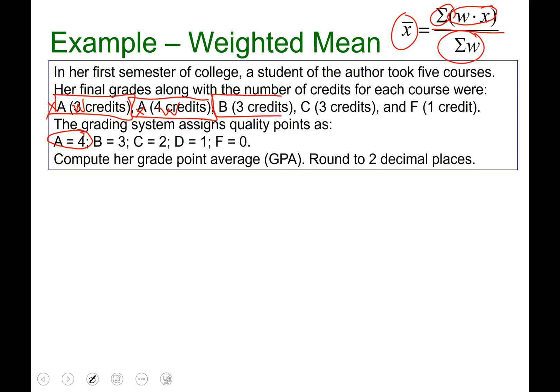She got a B in a three-credit class. So B is going to be the x, which would be three, and then the weight is three. Think of it as like a higher credit class weighs more on the GPA. So like this class, the statistics class, is four units. So that would weigh more than, let's say, a psychology class that happens to be worth three units. So she got a C in a three-unit class. So the credits is the weight on her GPA, and the C is going to be the x, which will be worth two points. And finally, she got an F in a one-unit class, which is the weight of the x, and x are worth zero.